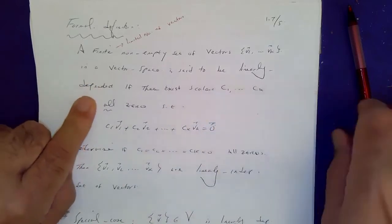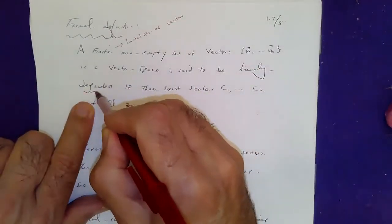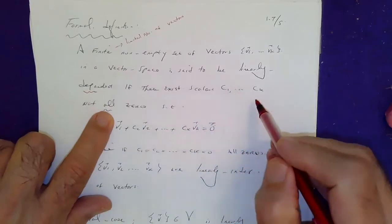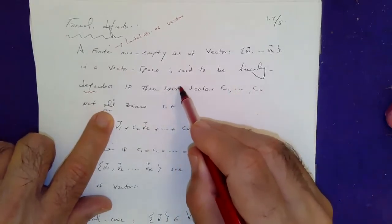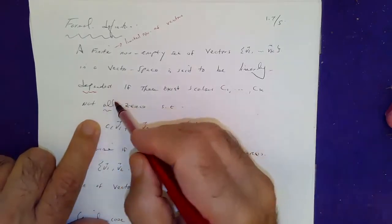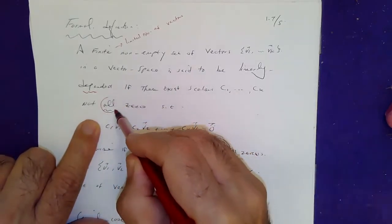It's said to be linearly dependent if there exists C1 through CK. Remember, there exists means we must find them. Not all zero, so they cannot be all zero.